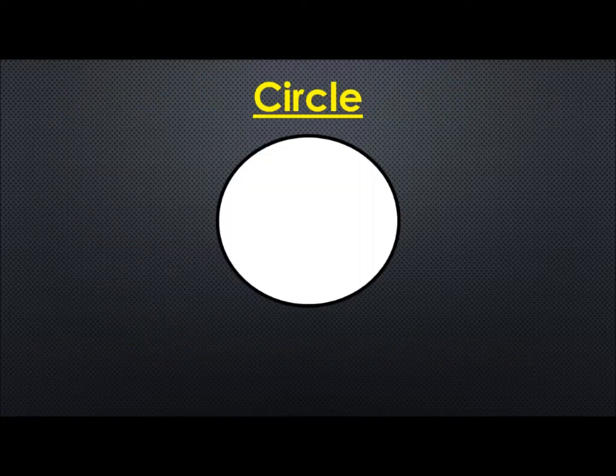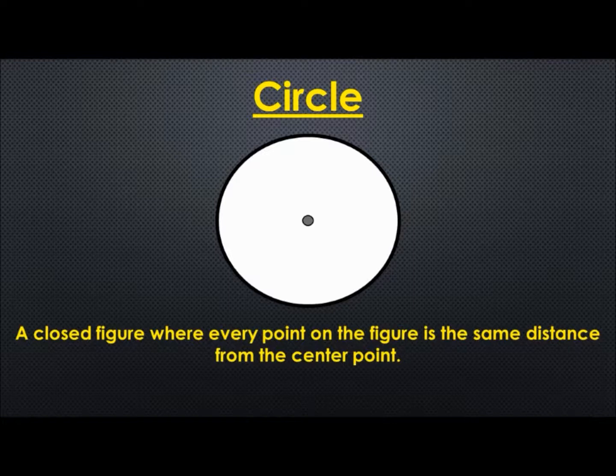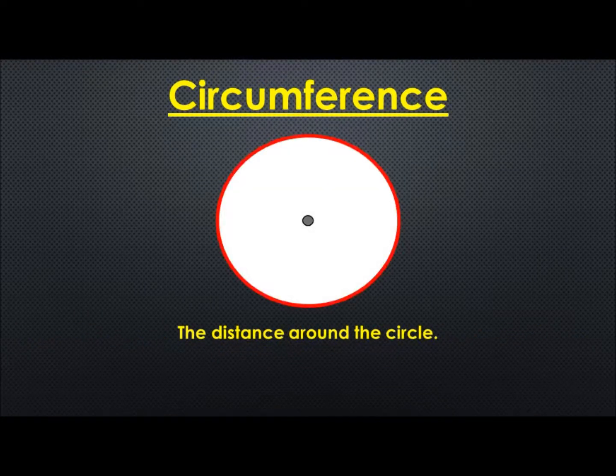To begin, a circle is a closed figure where every point on the figure is the same distance from the center point. The circumference is the distance around the circle.